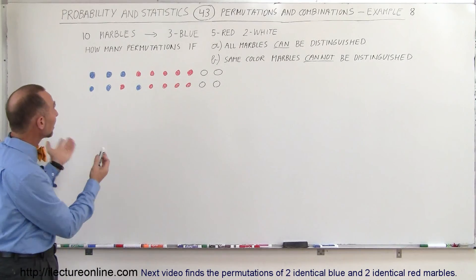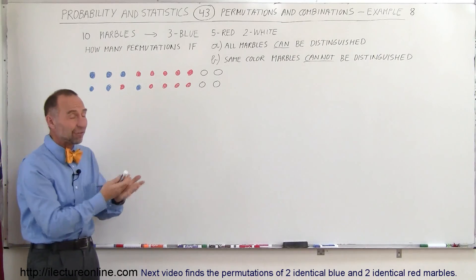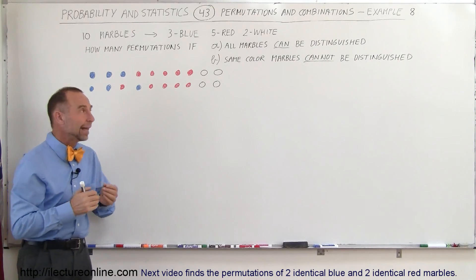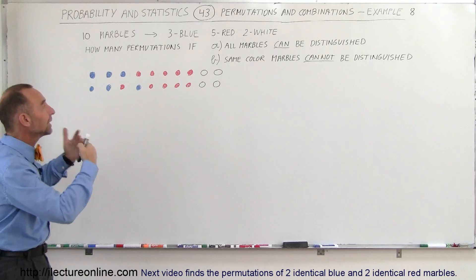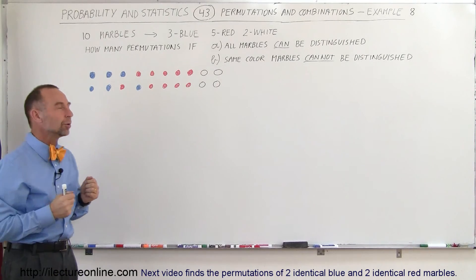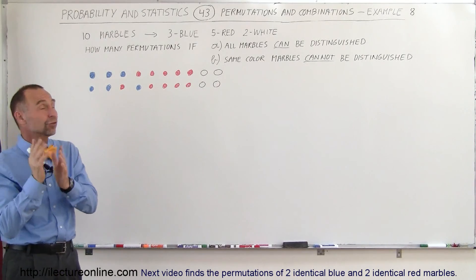Here we have a case where we have ten marbles: three blue ones, five red ones, two white ones. We're going to find the number of permutations, the number of ways in which we can rearrange these marbles. We're going to do it in two ways.